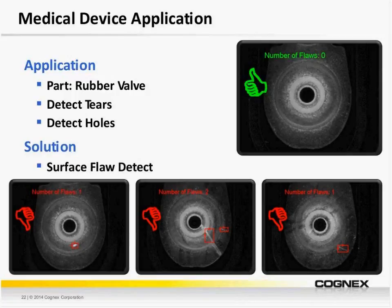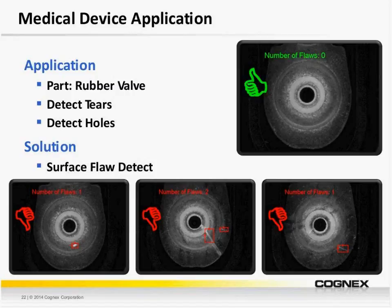Today, we're able to solve this with Surface Flaw. Specifically, we've applied a few surface flaw tools with annulus regions to account for the different sections of the valve. As you can see from the images, we're able to detect the various defects. The image on the left shows our ability to detect a small tear. On the middle image, we're detecting a small tear as well as some flash. And on the right, we're able to detect a tear along the surface.